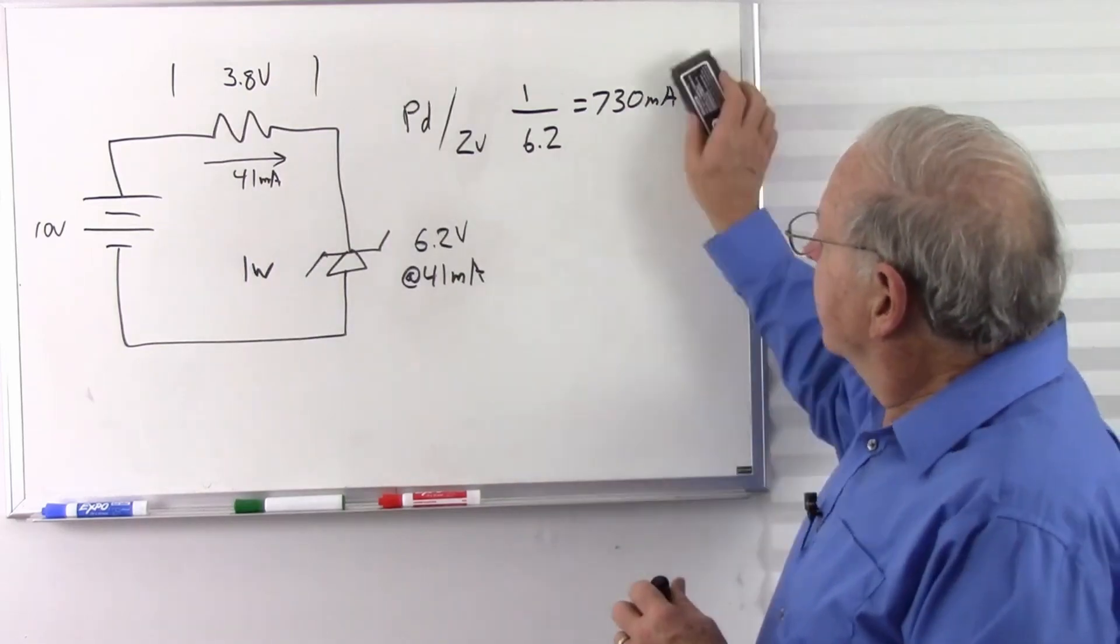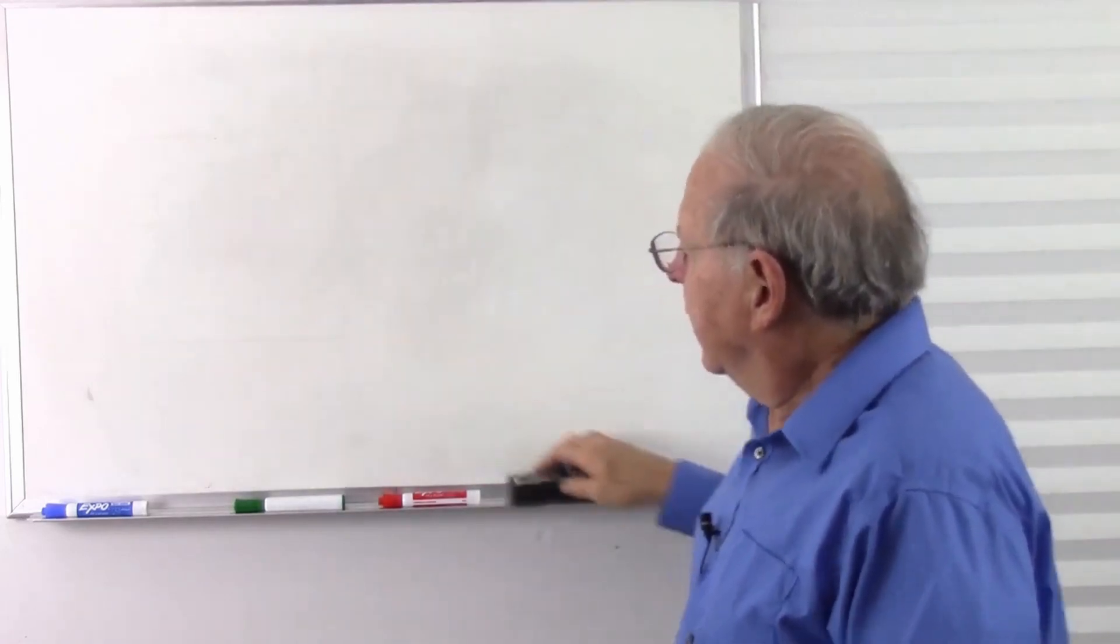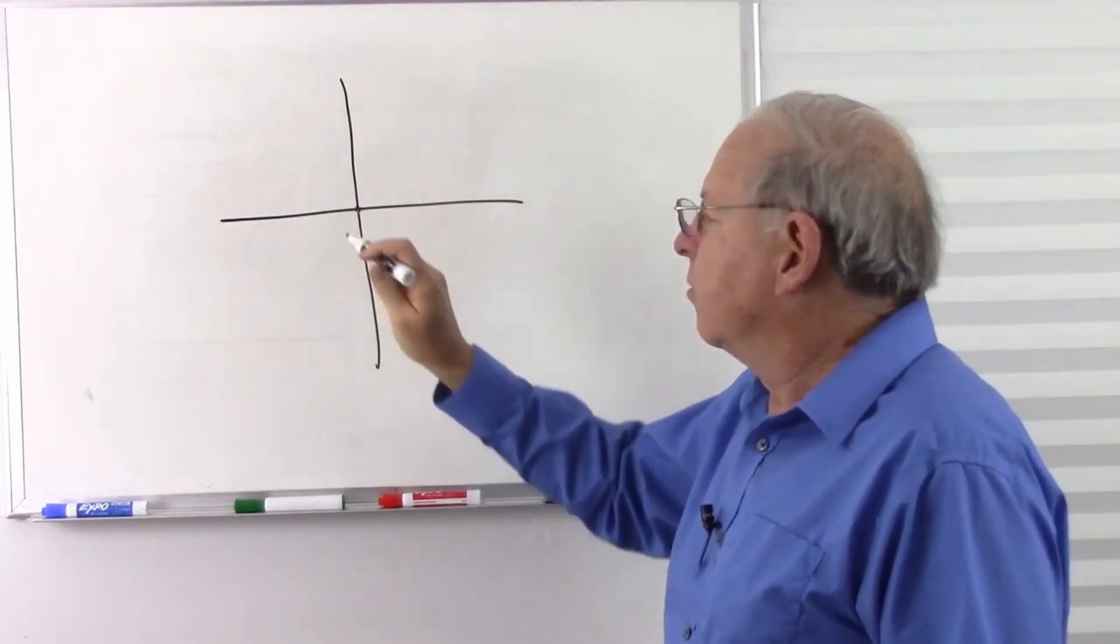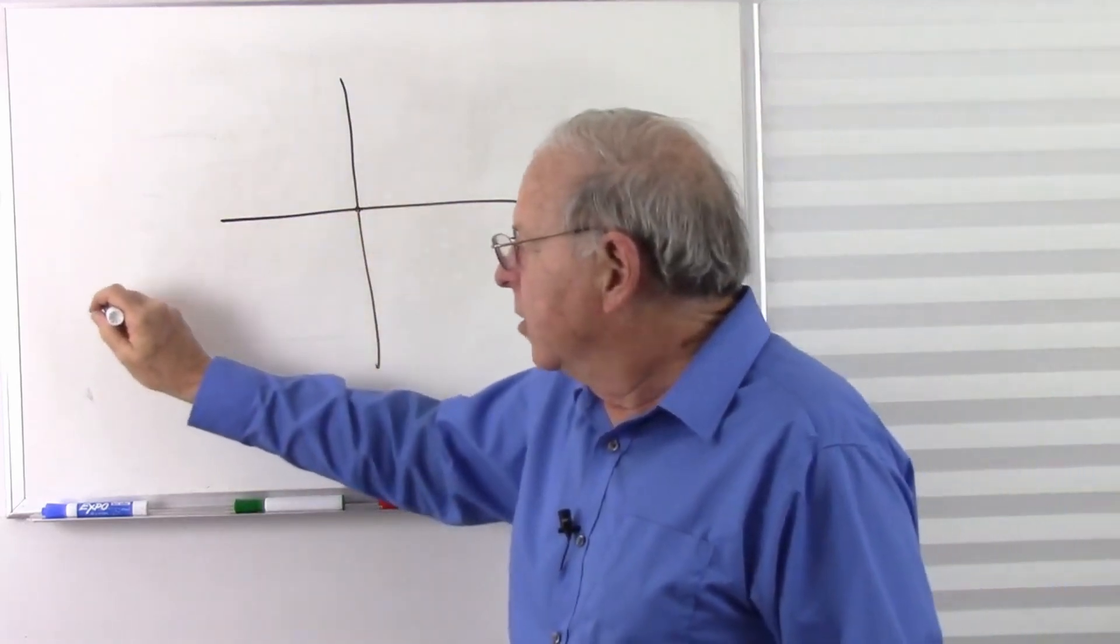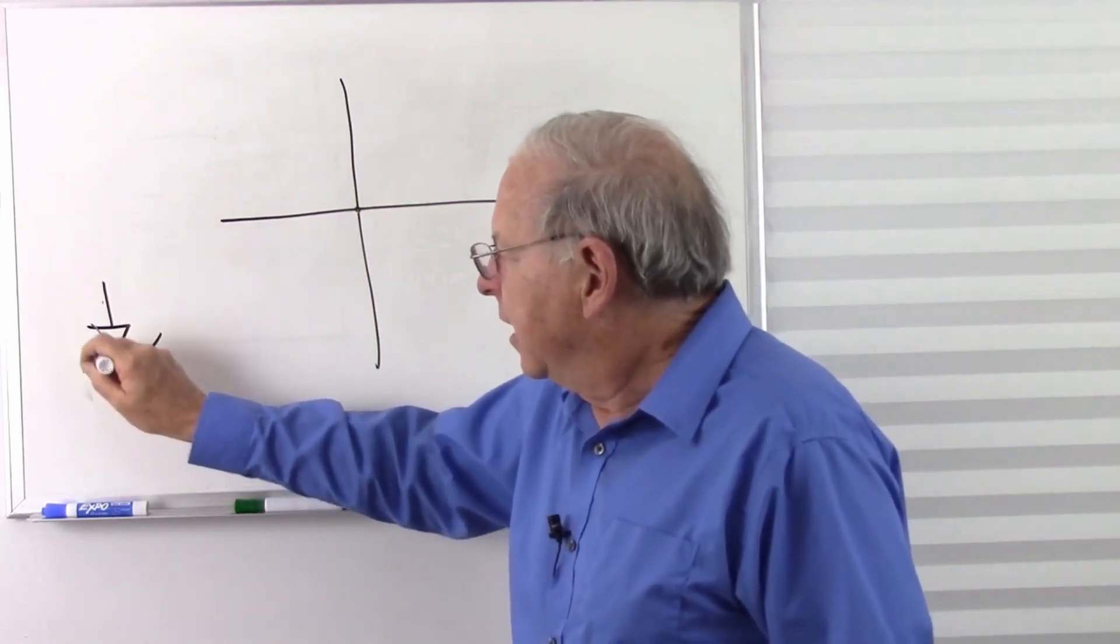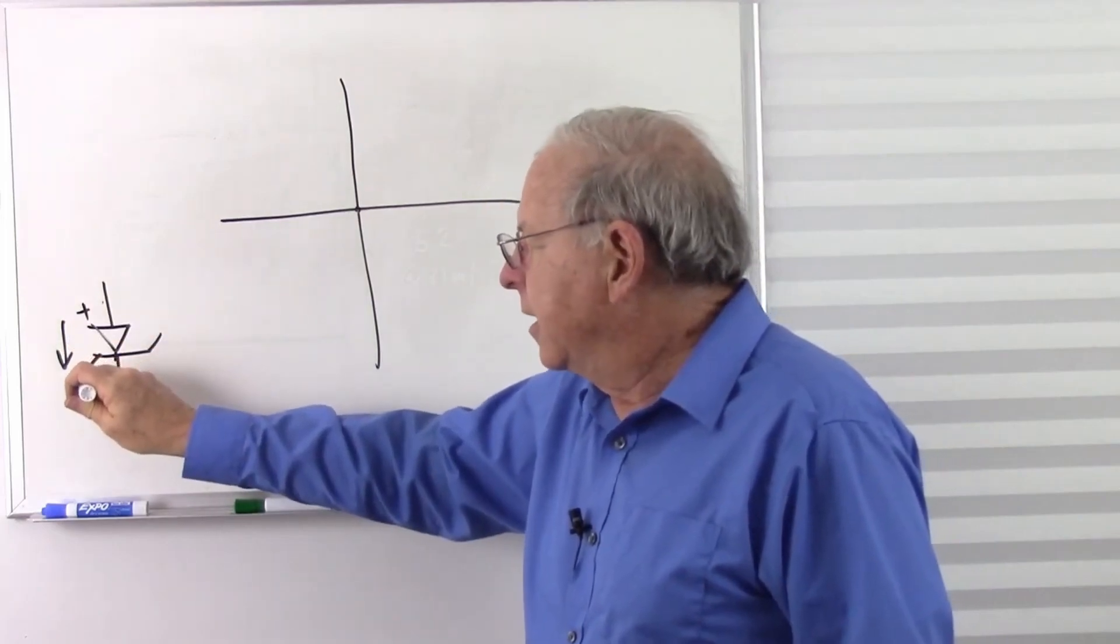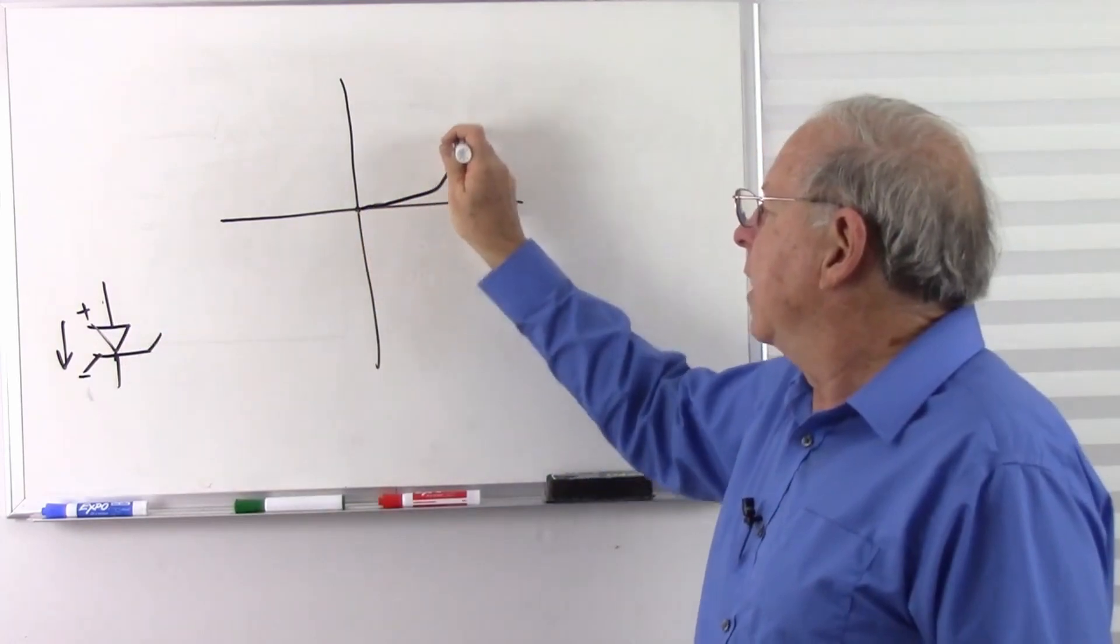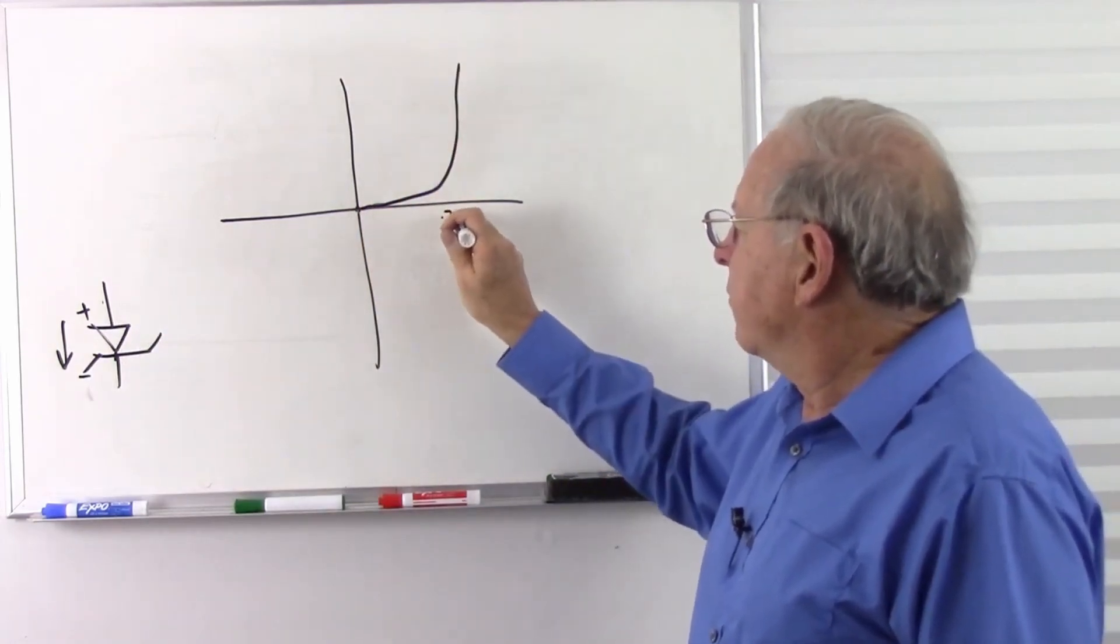What if we use a higher current? Well, if we look at the zener diode, let's look at the voltage curves. I'm going to draw a little x here. This is going to be zero volts and zero current. If we forward bias the diode, meaning that our current is traveling conventional current in the direction of the arrow, positive at the anode and negative at the cathode, we're going to get a curve that looks like any other diode. It's going to break at about 0.7 volts.